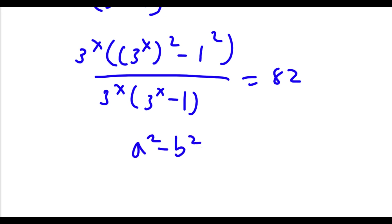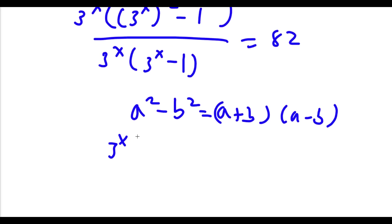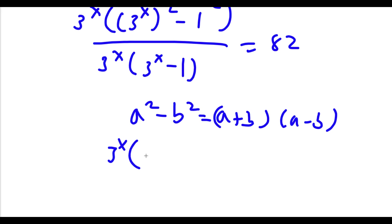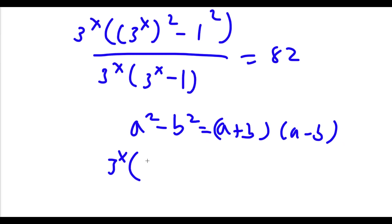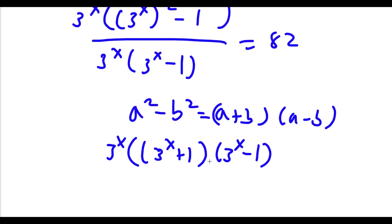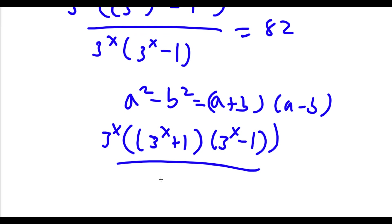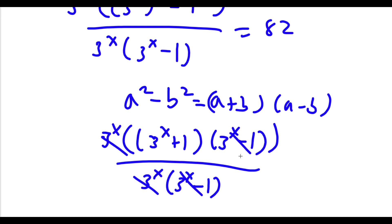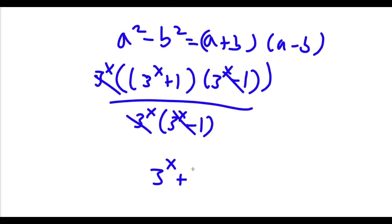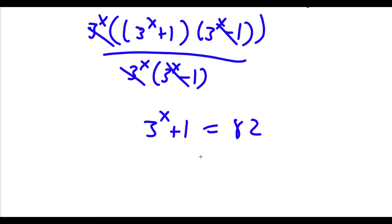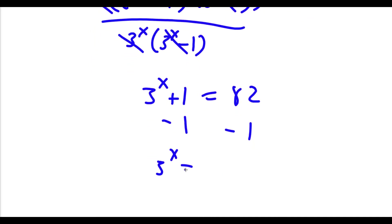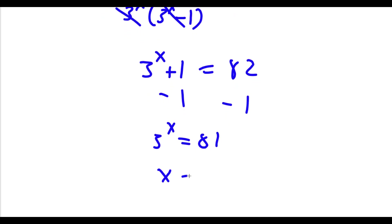Now if I have something in the form a squared minus b squared, this equals a plus b times a minus b. So I have 3 to the power of x times 3 to the power of x plus 1 times 3 to the power of x minus 1, all over 3 to the power of x times 3 to the power of x minus 1. These two cancel out, and these two cancel out, so all I'm left with is 3 to the power of x plus 1, which is equal to 82. Subtracting 1 from both sides gives 3 to the power of x equals 81, meaning x is equal to 4.